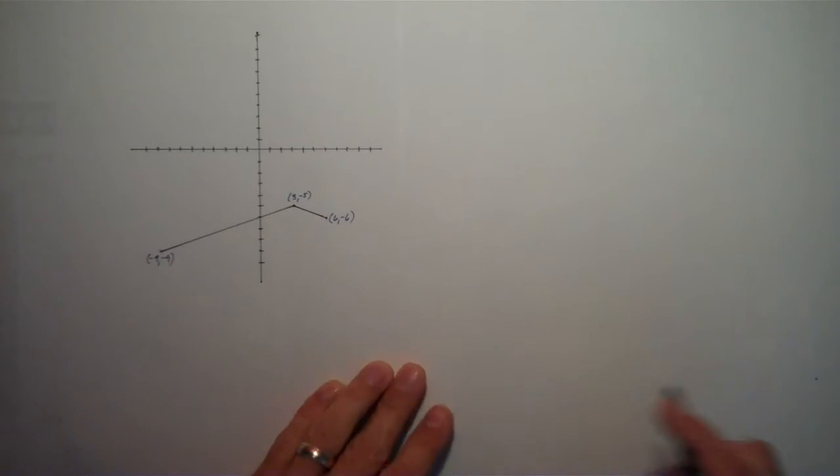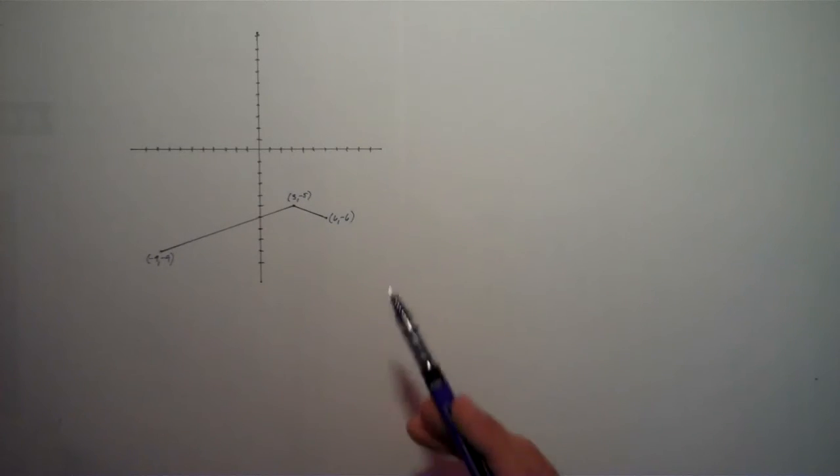In this video, we're going to look at this function here, look at this graph. We're going to identify what the function is, like what the equation of the function is, and we're also going to identify the domain and the range of the function.